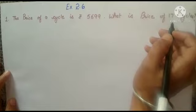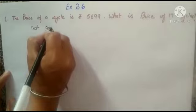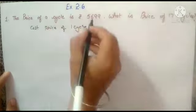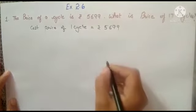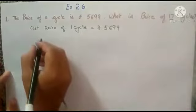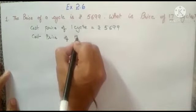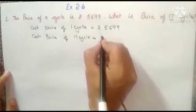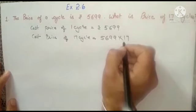Let me start. We will use the cost price of 1 cycle, which is Rs. 5,699. The cost price of 17 cycles is equal to — what do we need to do? We need to multiply 5,699 with 17.